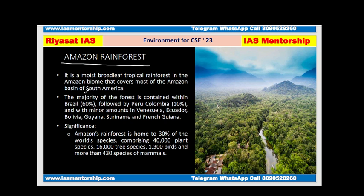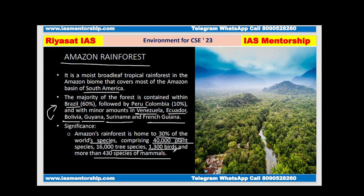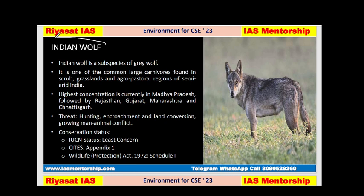The Amazon Rainforest in South America contains 60% of its area in Brazil, 10% in Peru and Colombia, and minor amounts in Venezuela, Ecuador, Bolivia, Guyana, Suriname, and French Guiana. It is home to 30% of the world's species — comprising 40,000 plant species, 60,000 tree species, 1,300 bird species, and more than 430 species of mammals.